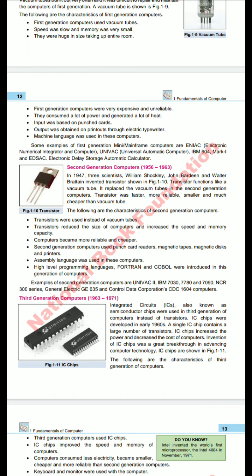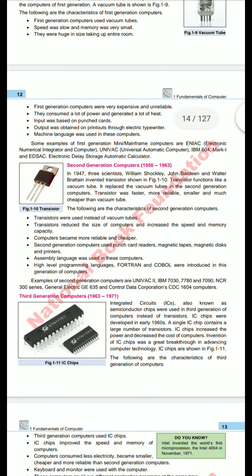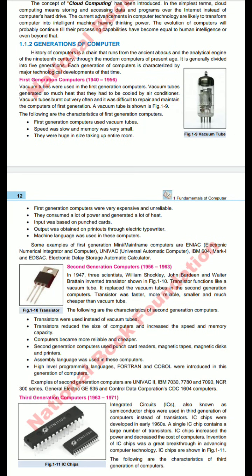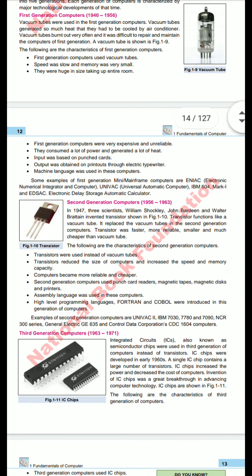Some examples of first generation computers are ENIAC (Electronic Numerical Integrator and Calculator), IBM 604, Mark 1, and EDSAC. To summarize: the time period was 1940 to 1956, a large number of vacuum tubes were used, computers were large in size taking up an entire room, they had low memory, and they generated a lot of heat.